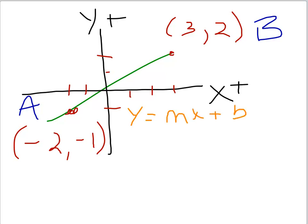And the first thing we need to do is to count. And counting we can see that we have a run of one, two, three, four, five, so our run is five. And this particular one rises from minus one, it rises one, two, three, so our rise is three.